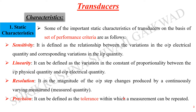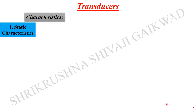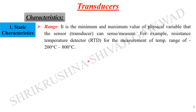Precision is defined as the tolerance within which a measurement can be repeated. The next characteristic is range — it is the minimum and maximum value of the physical variable that a sensor or transducer can sense or measure.